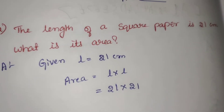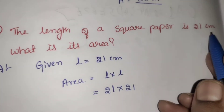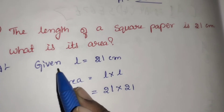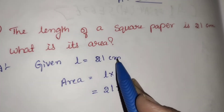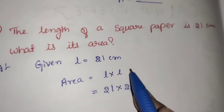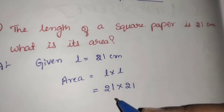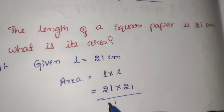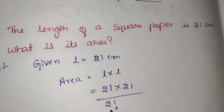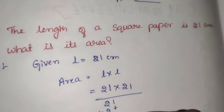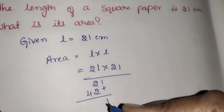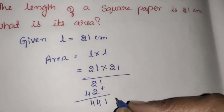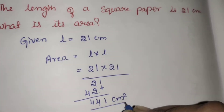Second problem: the length of a square paper is 21 centimeters. What is its area? Given length is equal to 21 centimeters. Area is equal to length into length, that is 21 into 21. 1 one is 1, 1 two is 2, plus 2 ones are 2, 2 twos are 4. Result: 441 centimeter square.